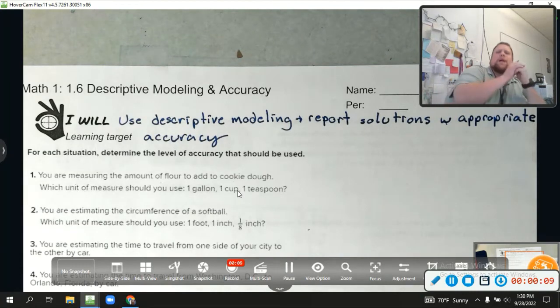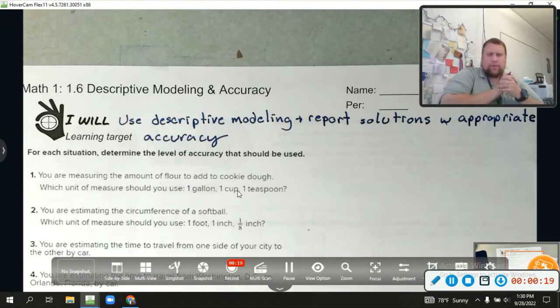1.6 Descriptive Modeling and Accuracy. So this is going to be kind of a different lesson, but the learning target is I will use descriptive modeling and report solutions with appropriate accuracy. So we're going to talk about how can we model a situation with math, and then what kind of accuracy do we need? Or how specific do we need to get with our answer to make it accurate?